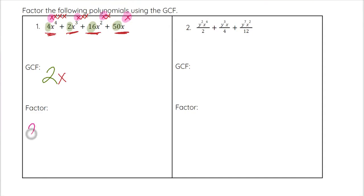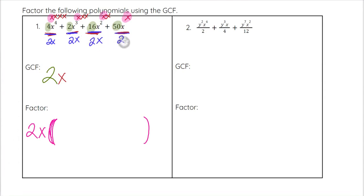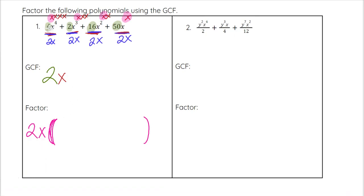Once we figure out our GCF, we write 2x in front of a set of parentheses — large enough for four terms. Now we divide each term by 2x. First: 4x⁴ ÷ 2x. We do 4 ÷ 2 = 2, and x⁴ ÷ x¹ = x³, giving 2x³. Next: 2x³ ÷ 2x. Two divided by 2 is 1, and x³ ÷ x¹ = x². Since it's 1x², you can drop the 1.